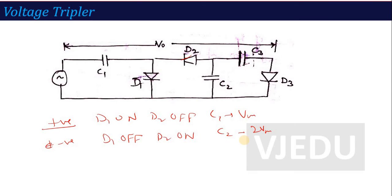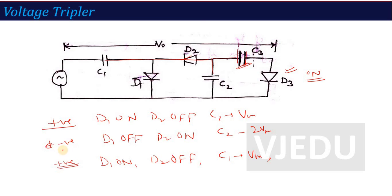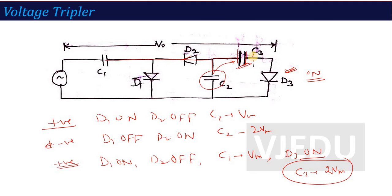During the second positive half cycle, D3 turns on, and the charge from C2 (2VM) transfers to C3, so C3 charges to 2VM as well. The output voltage in the Tripler is taken across C1 and C3. C1 has VM across it and C3 has 2VM across it — so the total voltage becomes thrice VM (3VM). This is the concept of the Voltage Tripler circuit.